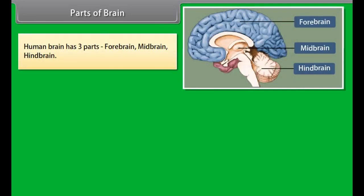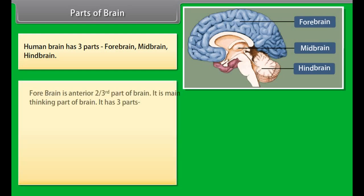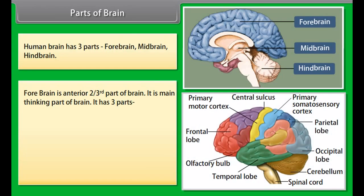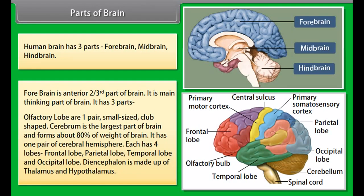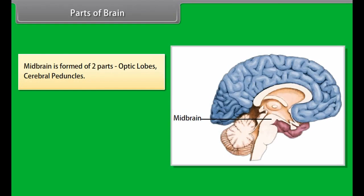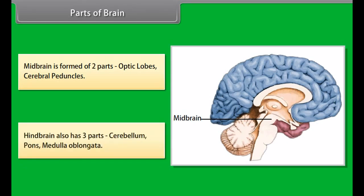The central nervous system consists of the brain and spinal cord. All life activities are under the control of the brain. The human brain is a soft, whitish, large, and slightly flattened structure present in the cranial cavity. The weight of the brain is about 1200 to 1400 grams. It is covered with three meninges: the pia mater (inner), arachnoid (middle), and dura mater (outer). The space between membranes is filled with cerebrospinal fluid. The brain has grey matter outside and white matter inside.